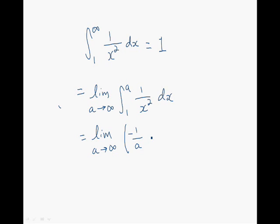And now if we evaluate this limit, of course, the limit as a approaches infinity for minus 1 over a is 0. So what I'm left with is 0 plus 1 is equal to 1.